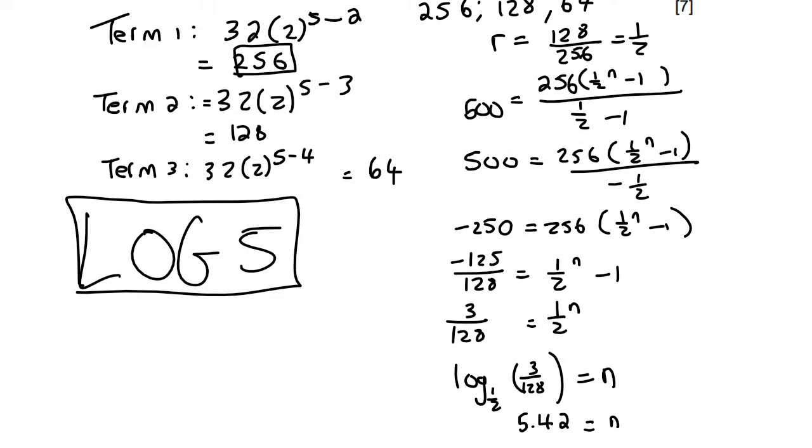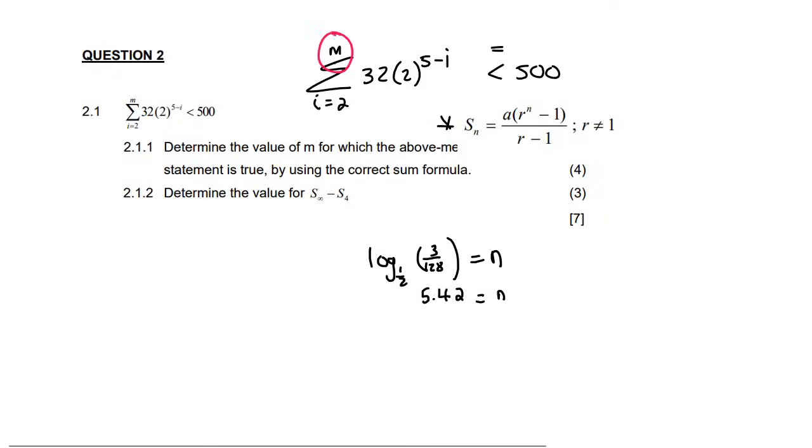n is equal to 5.42, but that's not the answer, because they want to know what must m be. So we should know by now that the number of terms, to work out the number of terms, if you've looked at my previous sigma notation videos, you'll know that it's always the number at the top, which is m, minus the number at the bottom, plus 1. So the number of terms we just worked out is 5.42.